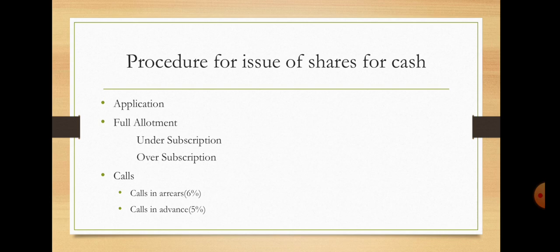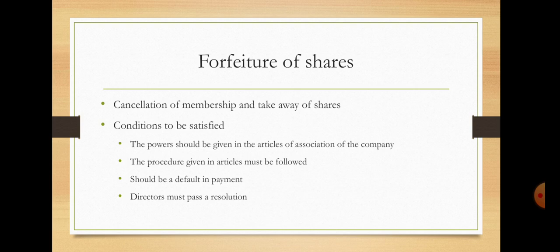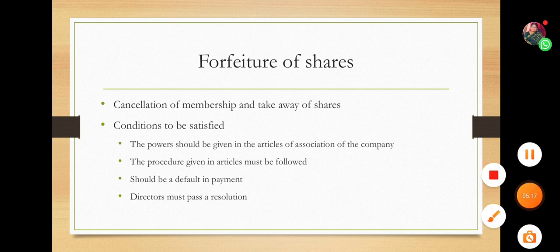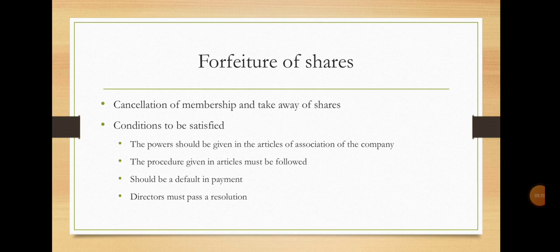The procedures for issue of shares for cash involve application, allotment, and calls. Forfeiture of shares is the cancellation of membership and taking away of shares — this is called forfeiture. The conditions for forfeiting shares are: the shares must be forfeited after issuing notification to the shareholders, the forfeiture should be due to default in payment, and after passing a resolution in the annual meeting, the company may forfeit its shares.